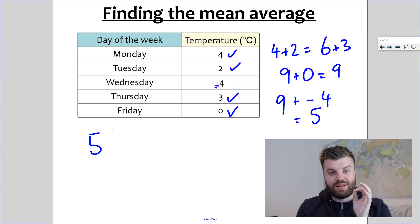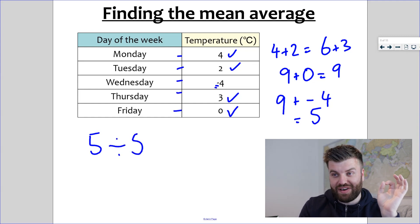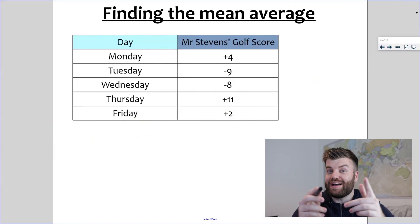Is that the mean average? No. You've got to divide by the total number of data points you have. And we have one, two, three, four, five separate pieces of data. Five divided by five, the answer is one degree centigrade. The average temperature for that week was one degree centigrade. Don't be put off by negatives. You can still calculate the mean average.